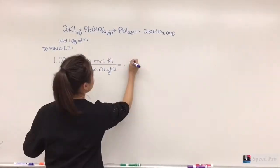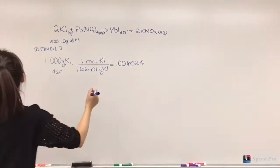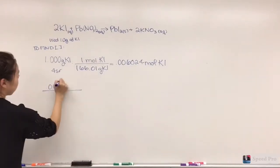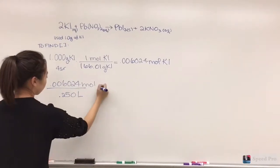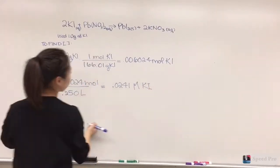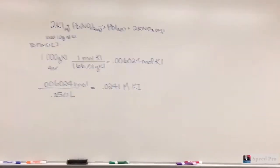By doing stoichiometry with KI's molar mass, it was calculated that one gram of the solid contained 0.006204 moles of it. This was divided by 0.25 liters to calculate the molarity of the potassium iodide solution to be 0.0241 molar.